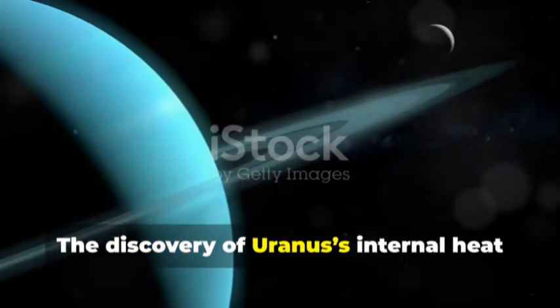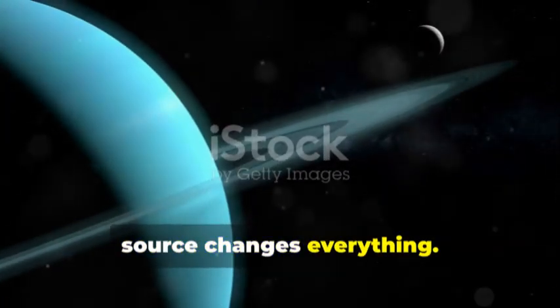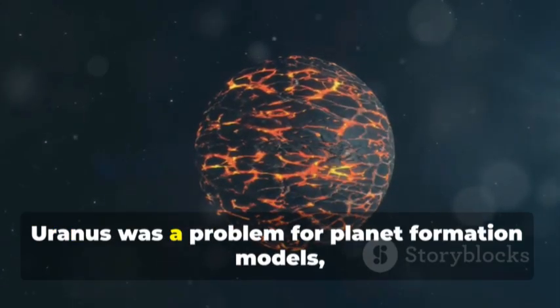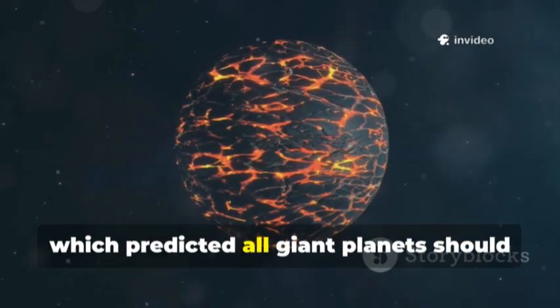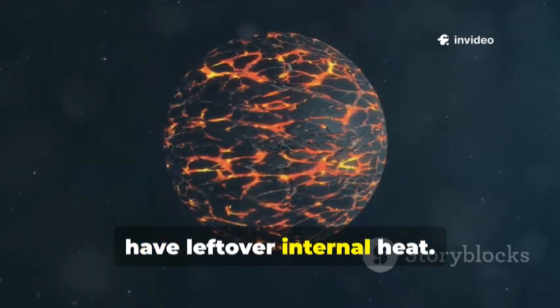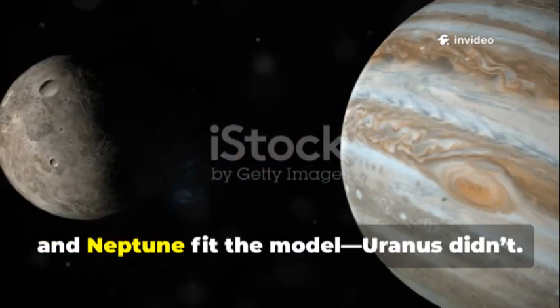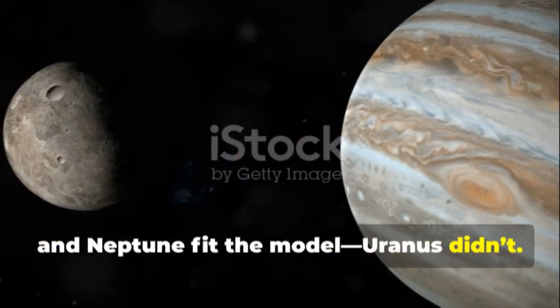The discovery of Uranus's internal heat source changes everything. For years Uranus was a problem for planet formation models, which predicted all giant planets should have leftover internal heat. Jupiter, Saturn and Neptune fit the model, Uranus didn't.